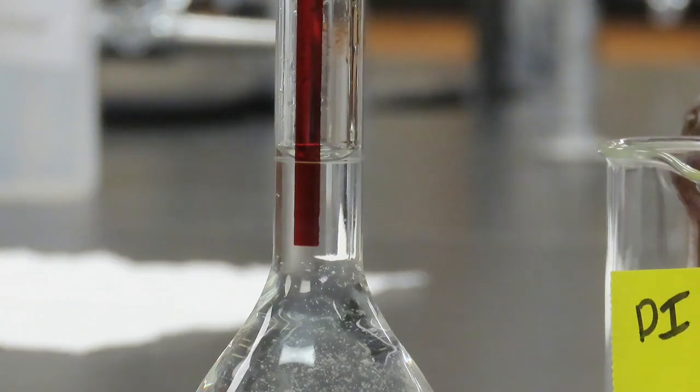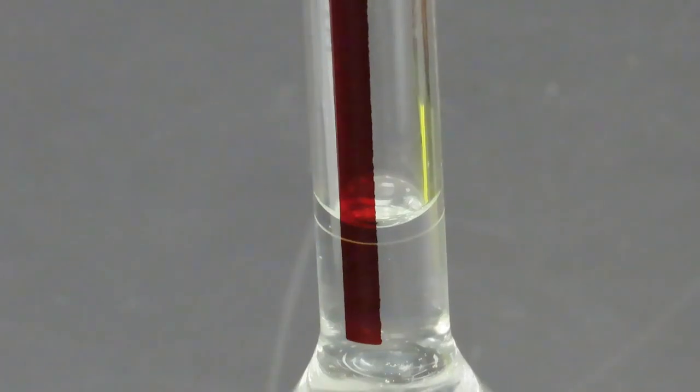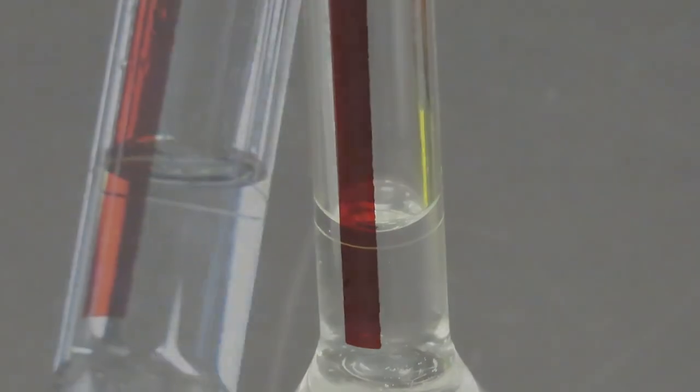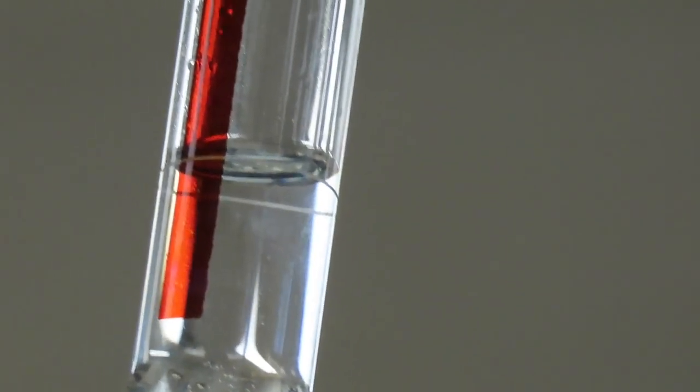Again, we want to make sure that the meniscus at eye level touches the bottom of that line. If looking from above, not eye level, we have an inaccurate reading, as in the case of looking below eye level.